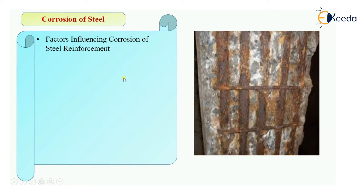Now let's see what are the factors that influence the corrosion of steel reinforcement. The first factor is pH value. As I told you in the previous video, if the pH value is less than 10, there are chances of corrosion of steel.